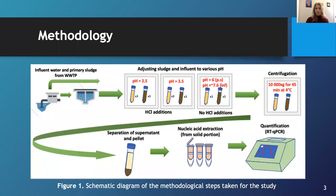The wastewater samples were retrieved from Robert O. Pickard Environmental Center in the city of Ottawa and kept at 4 degrees Celsius. The study was conducted on primary sludge and influent samples. Influent samples are taken from wastewater flowing into the treatment facility, and sludge samples are the soluble solids separated from the liquids during processing, meaning they are thicker and more concentrated.